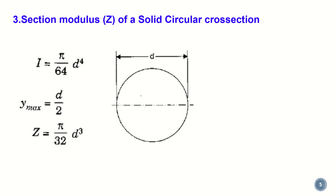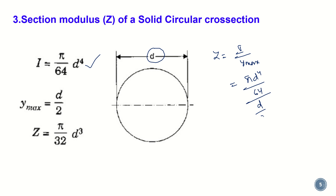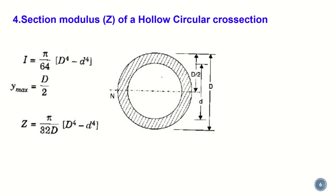For a solid circular section, the moment of inertia is πd⁴/64. Here y_max = d/2, since the outermost fiber is at a distance of the radius from the neutral axis. Applying Z = I / y_max gives Z = (πd⁴/64) / (d/2), which simplifies to Z = πd³/32.